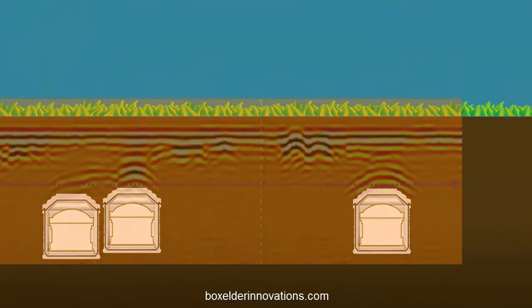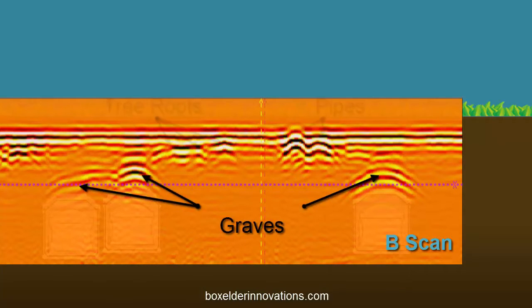Collected data is put together to form a two-dimensional data set called a B-scan. This represents a vertical slice into the ground, which gives the depth of graves or other objects in the ground.